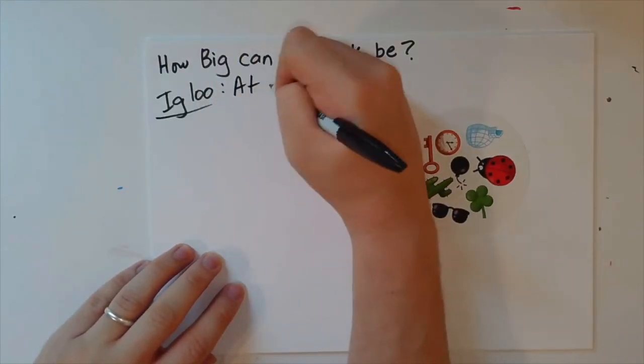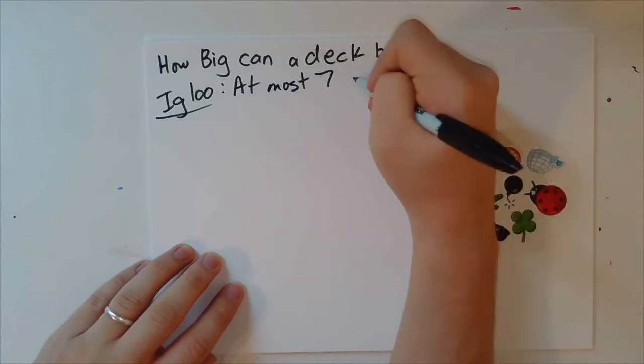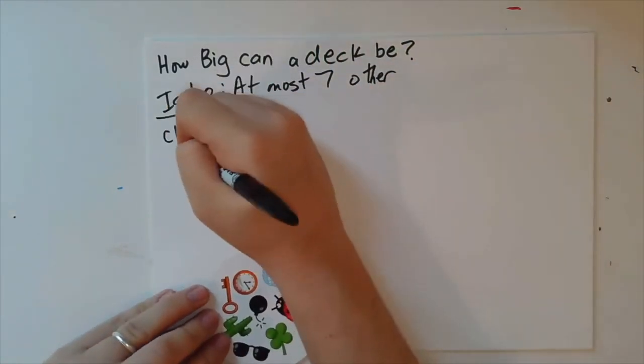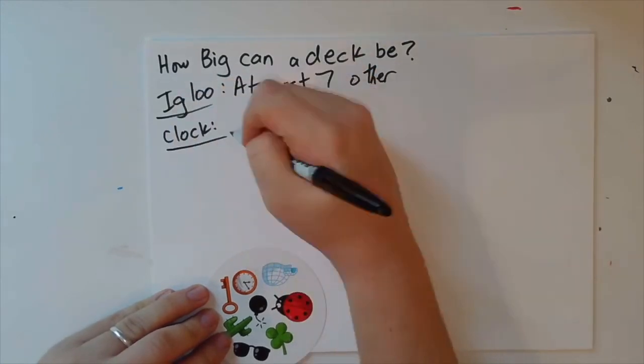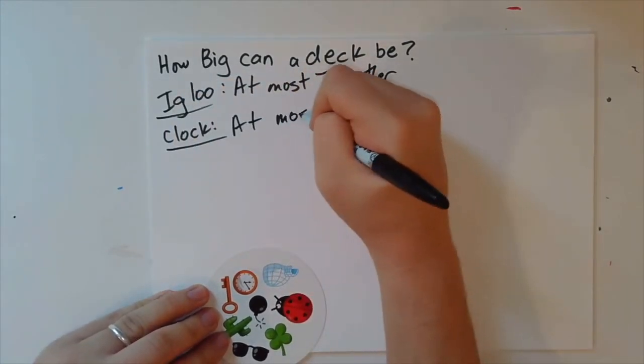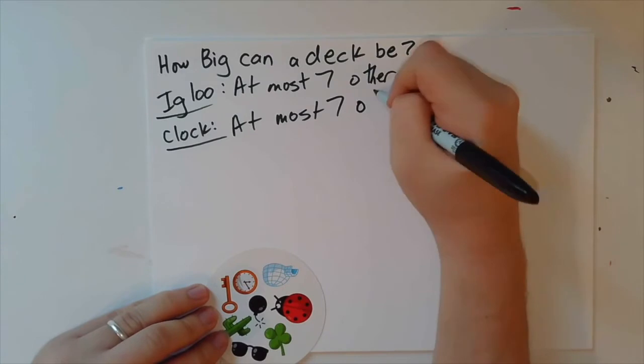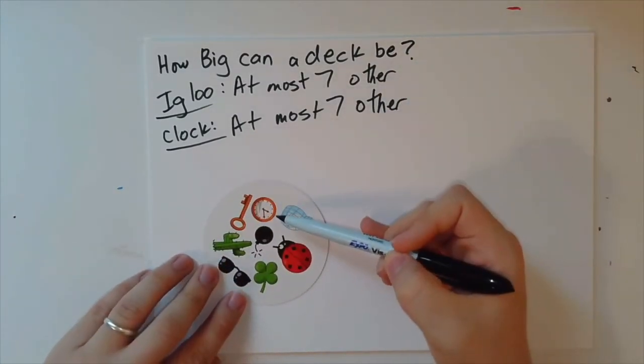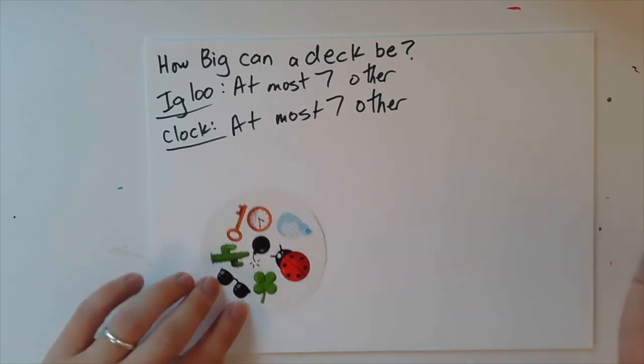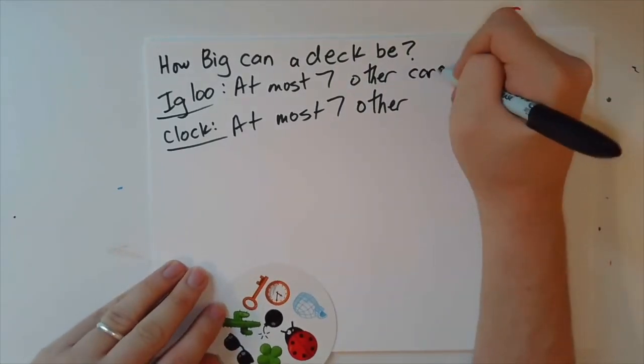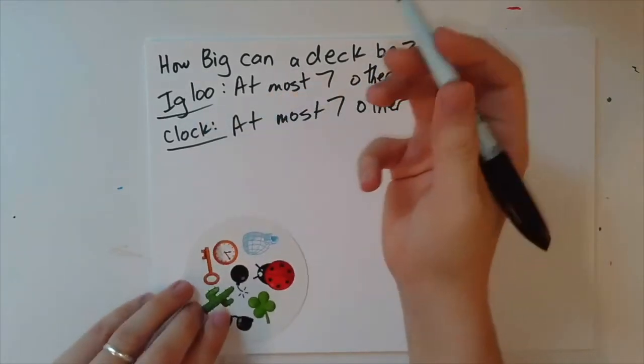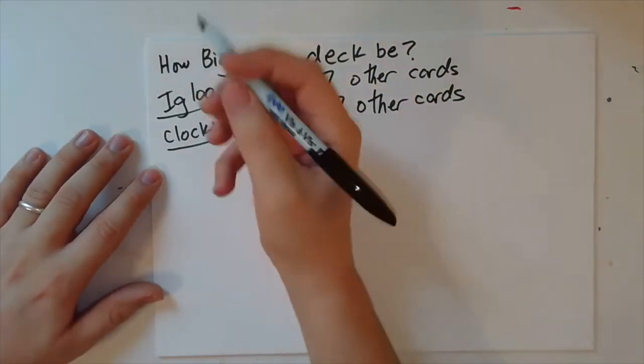Okay. Well, the clock, there could be at most seven others. Why? Because we proved every symbol shows up at most eight total times. And likewise, true of all of these other things. So I'll just write this out real quick.